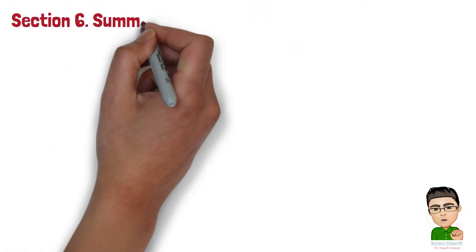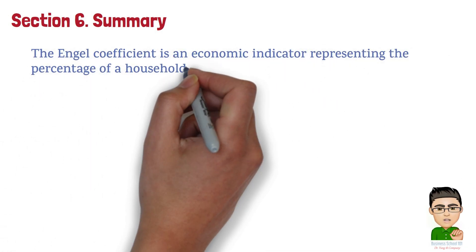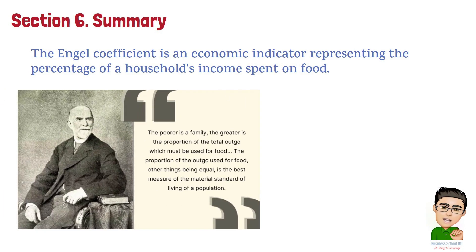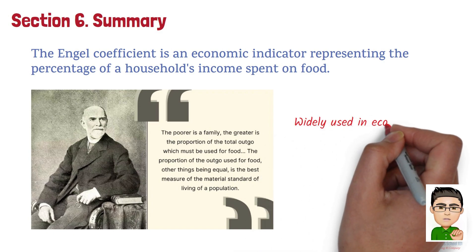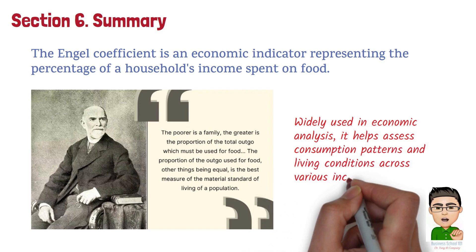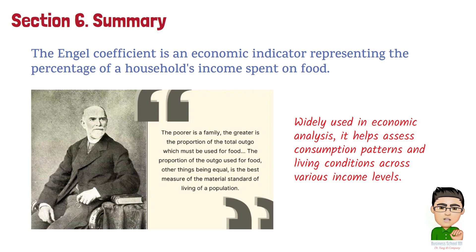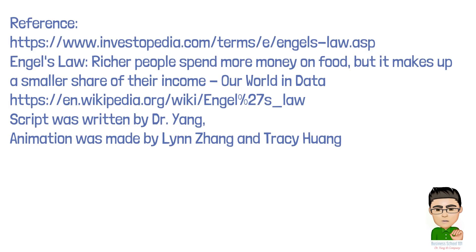Section 6: Summary. To sum up, the Engel Coefficient is an economic indicator representing the percentage of a household's income spent on food. It reflects the observation that as income rises, the proportion spent on food typically falls, suggesting improved living standards. Widely used in economic analysis, it helps assess consumption patterns and living conditions across various income levels. If you have any questions, please leave your thoughts in the comments below. I hope you enjoyed this video — give it a thumbs up and subscribe to the channel. Thanks for watching and I'll see you next time.